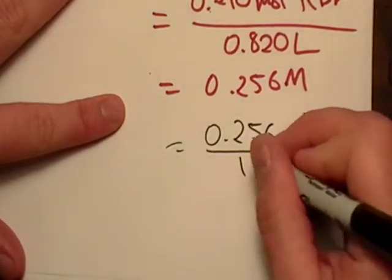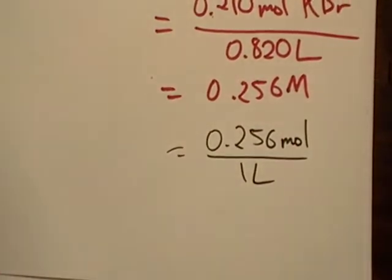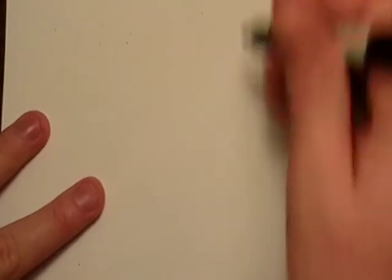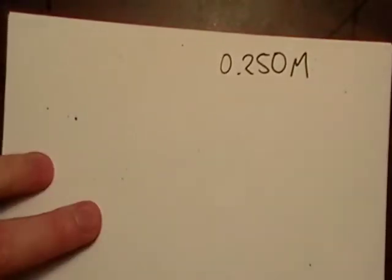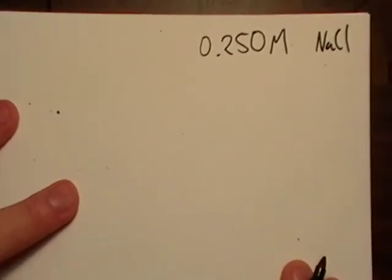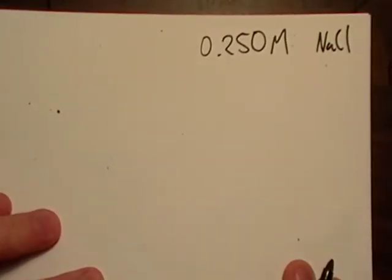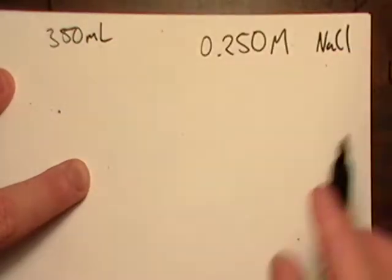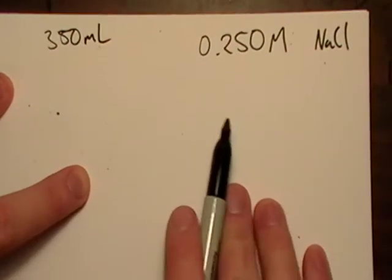All right, so do we need to do one more? Actually yes, let's do one more and let's throw a little twist on it. Okay, let's make a difference. Let's say I give you the molarity of something. And let's do sodium chloride because it's easy and I've pretty much got everything about it memorized. And let's go 350 milliliters. Okay, how many moles?